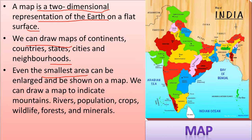We can draw a map to indicate different things like mountains, rivers, population, crops, wildlife, forests, and minerals. Maps also have limitations: the earth's shape is spherical and that cannot be shown accurately on a flat surface. Also, maps distort the shape and the size of landforms as we are showing the areas on a flat surface.